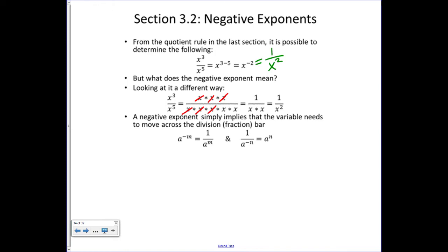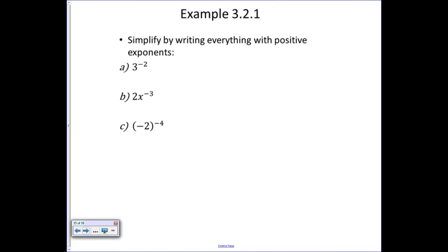A negative exponent implies that the variable needs to move across the division bar for the exponent to become positive. If the negative exponent is in the numerator, the variable moves to the denominator and the exponent becomes positive. If the negative exponent is in the denominator, it moves to the numerator and becomes positive. You're just moving across the division bar and changing the sign of the exponent.